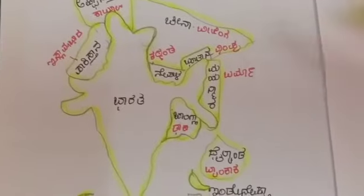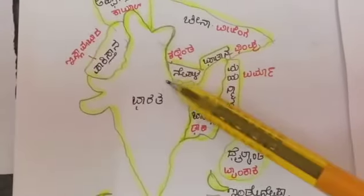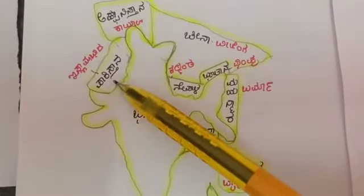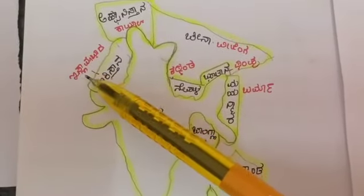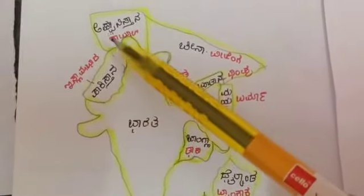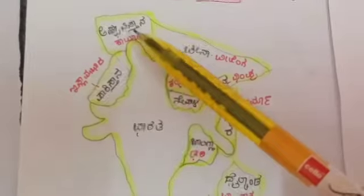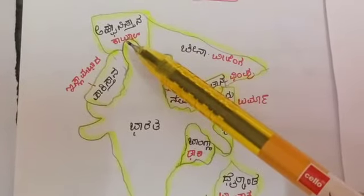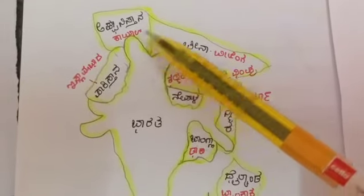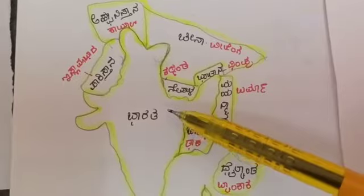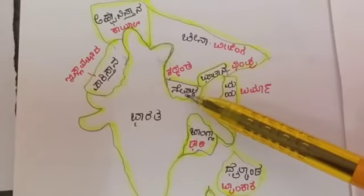First, Bharat. This is Pakistan. This is the Russian government. The Russian government is in Afghanistan. The Russian government is in Estonia. This country is Nepal.